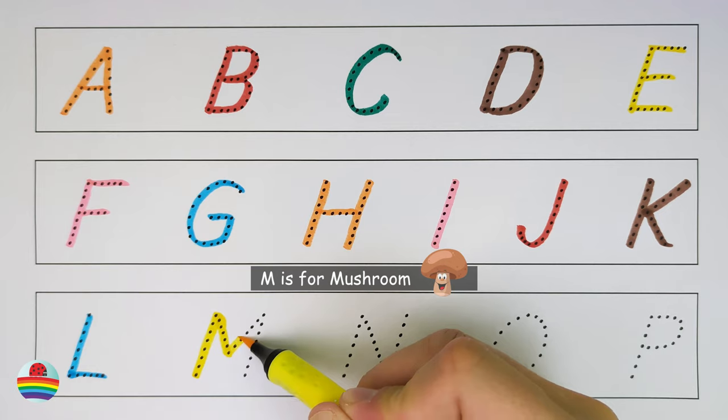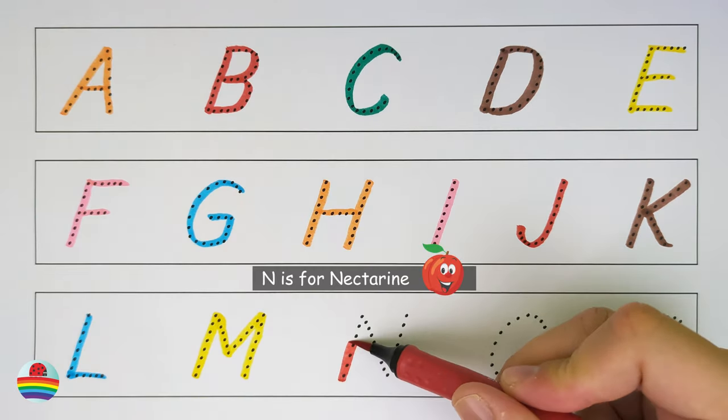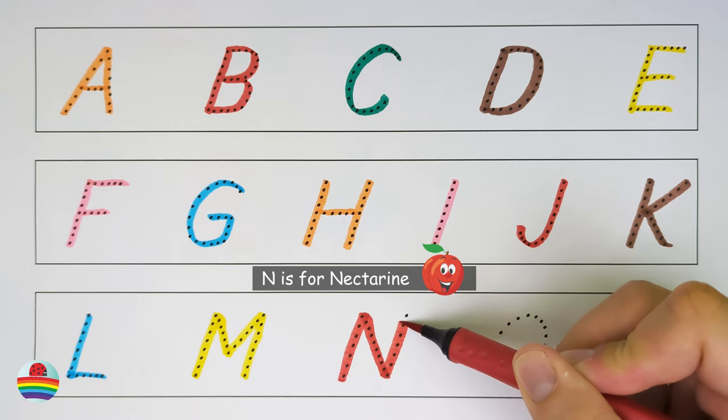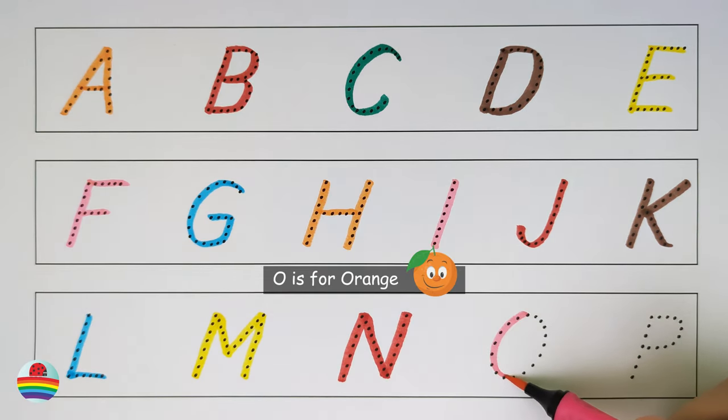M. M is for mushroom. N. N is for nectarine. O. O is for orange.